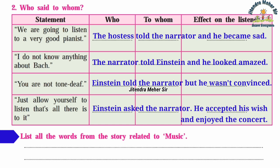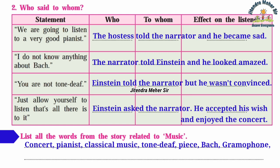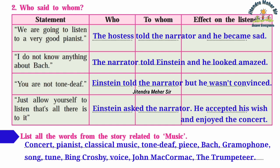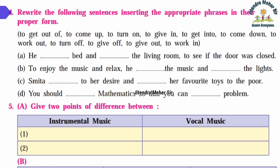Activity three: List all the words from the story related to music: concert, pianist, classical music, tone deaf, piece, Bach, gramophone, song, tune, Bing Crosby, voice, John McCormack, trumpeter.